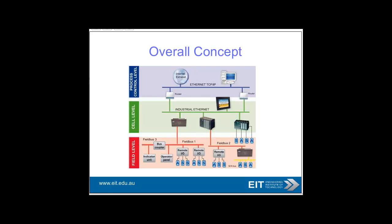Down at the field level, you don't really see TCP/IP at this stage, although in the future you probably will see more of it. But at the moment, you see fieldbus and DeviceNet. For obvious reasons, fieldbus — for example in an intrinsically safe area — you probably need a Foundation Fieldbus solution or a Profibus PA solution. With RS485, you can't really send it to those areas. And then at the cell level and the level above, industrial networks need TCP/IP, and then obviously at the control level, also TCP/IP.